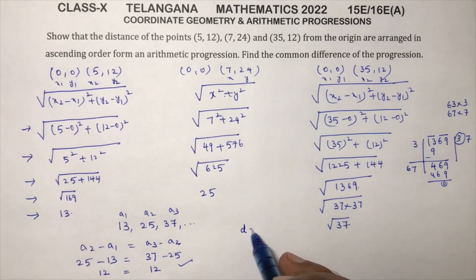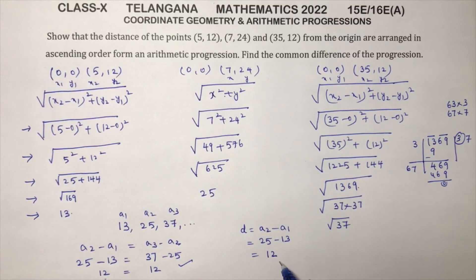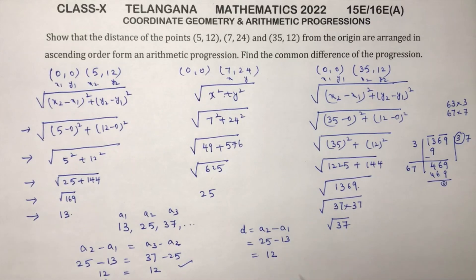So these three numbers form an AP, and they are asking common difference. Common difference is 12. If you want you can calculate a2 minus a1, that is 25 minus 13, which is nothing but 12. So common difference is 12 and it forms an AP.